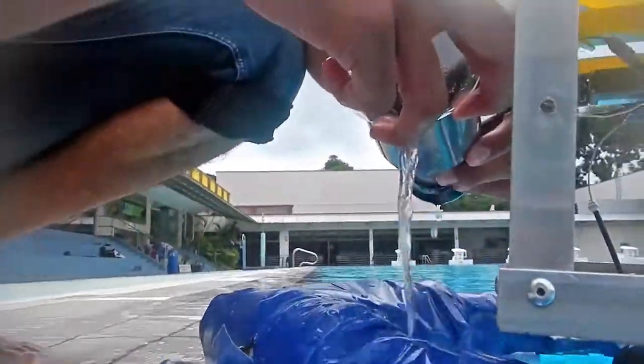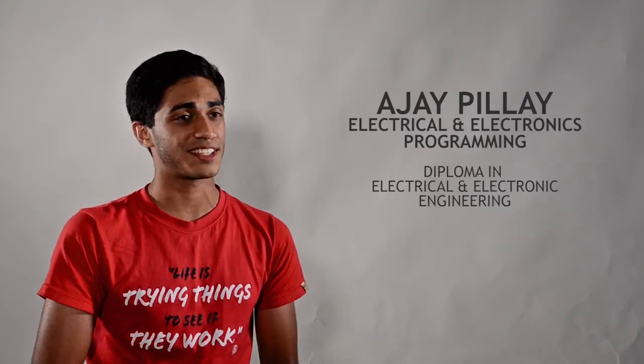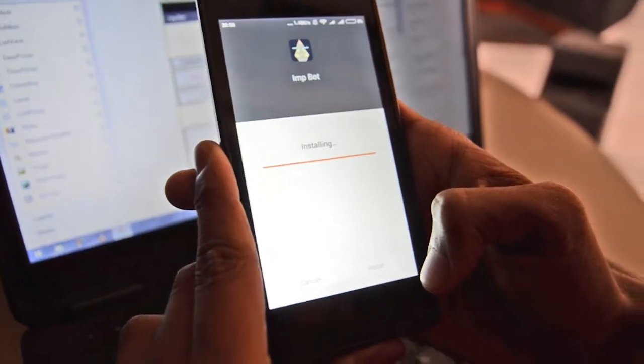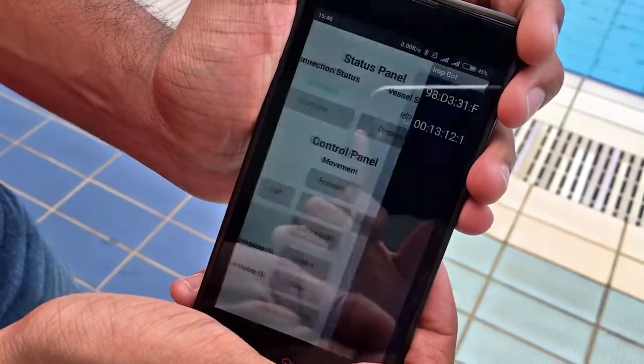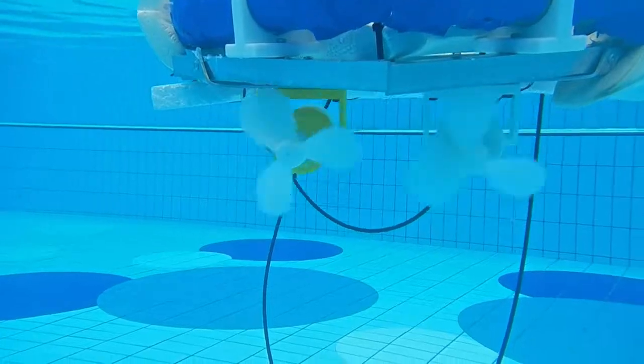What distinguishes InBot from the manually controlled Niskin and Van Dorn water samplers is the fact that it is electronically controlled. With a quick scan of a QR code, you are able to download an Android application to your phone, which then gives you full control over the InBot's navigation and water collection functions.